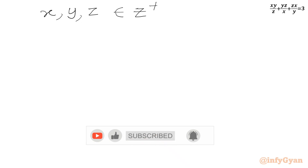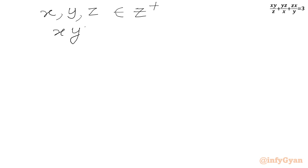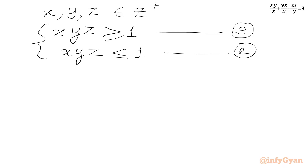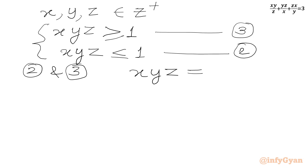Now we write one more condition: since x, y, z are positive integers, the minimum value of the product xyz is 1. So xyz ≥ 1 — let us call this equation 3. From equation 2 (xyz ≤ 1) and equation 3 (xyz ≥ 1), we can conclude that xyz must equal exactly 1.